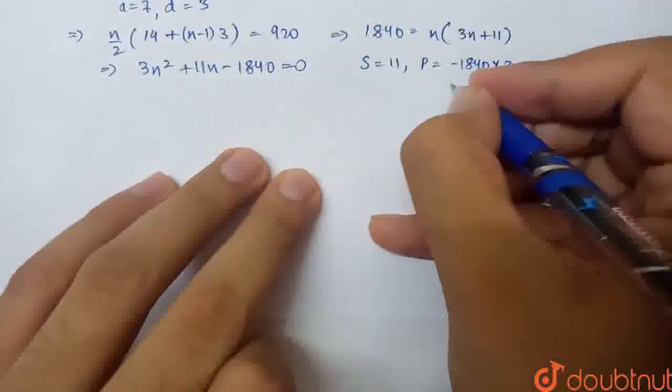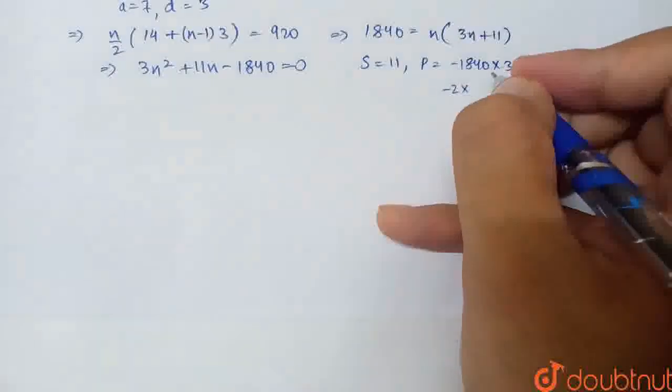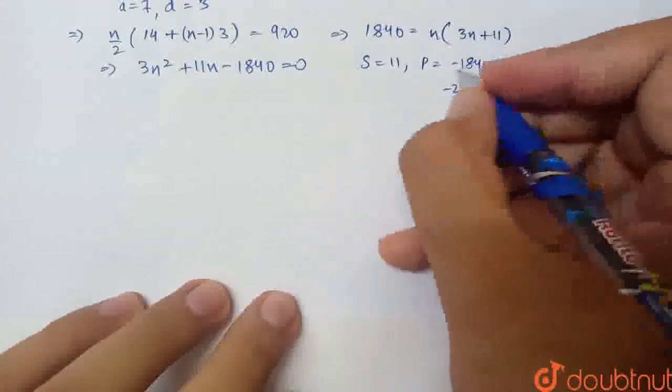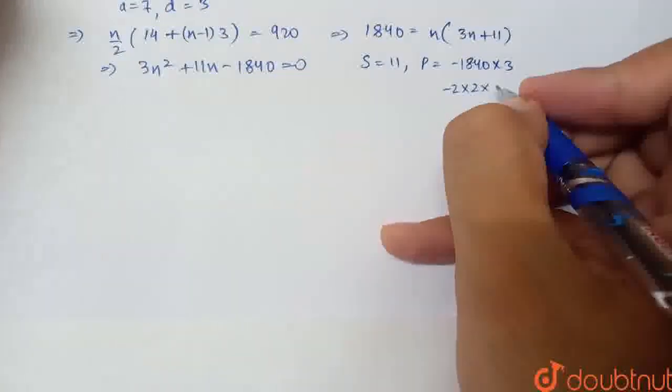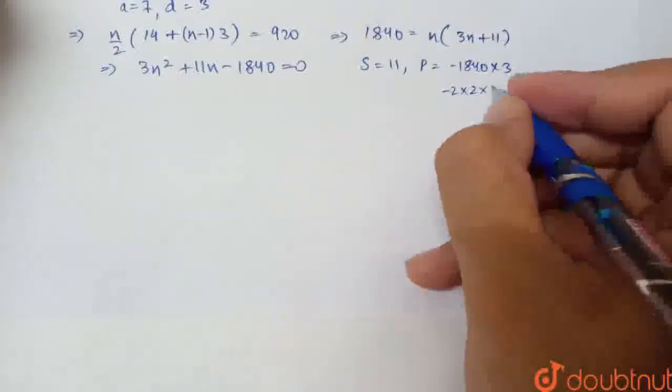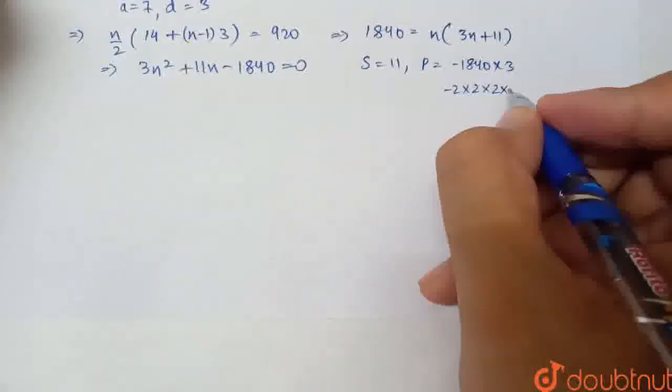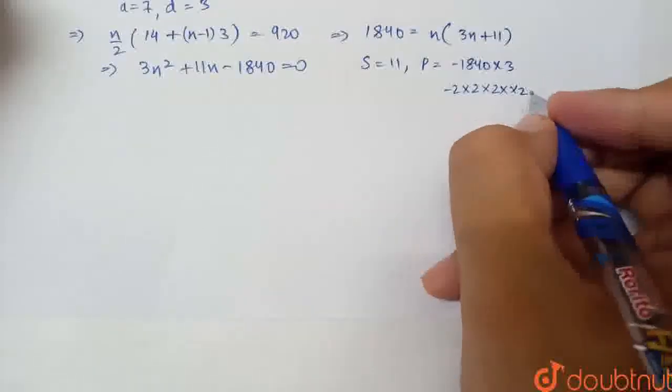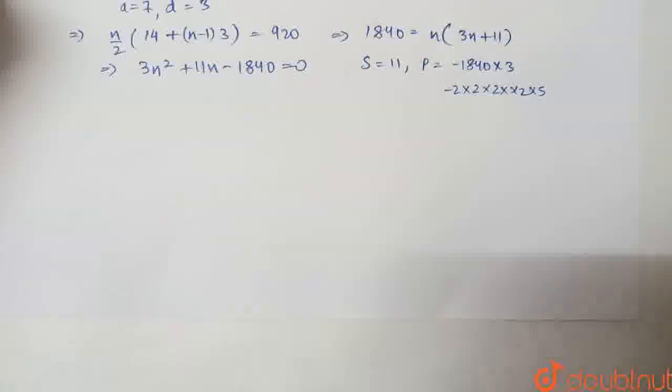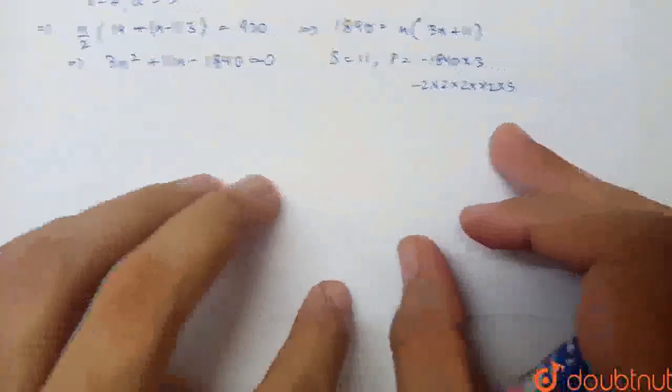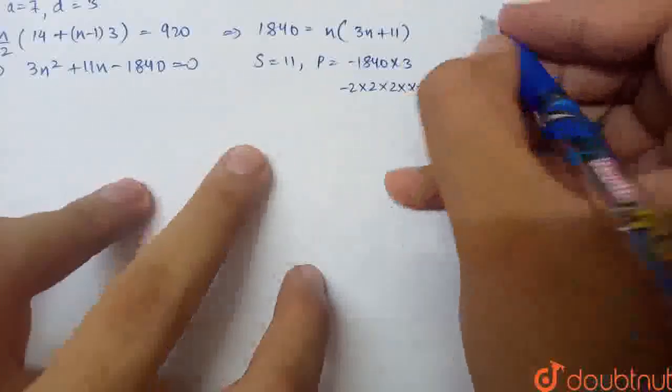If I start to solve the factorization, I'll factor -1840. 920 × 2, then -2 × 2. This 920 will be divisible. Then, further it will come out to be 2 again, then 2, then 5.